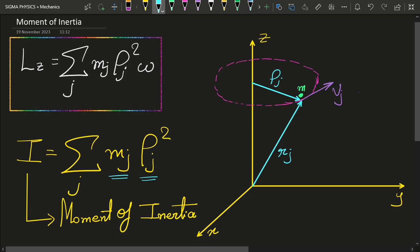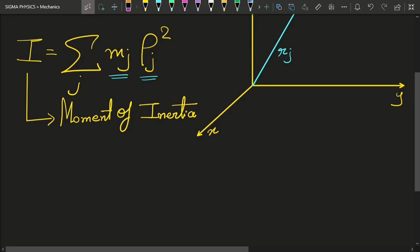Now we can write the summation only when the masses are discretely distributed, that is, there are a finite number of masses. Let's say we have an imaginary body which is made up of a finite number of particles m1, m2, m3, and m4. Then we can write the sum. But if there are an infinite number of such masses or particles which make up the body, then what we will have to do is...